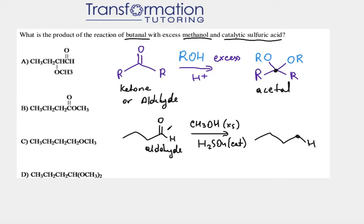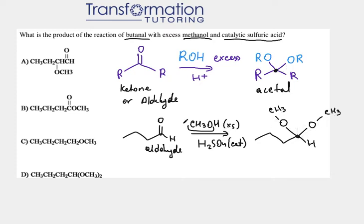To draw the acetal, we look at the carbonyl carbon — the carbon with the double bond O — and we no longer draw the double bond O. Instead, we draw two bonds each connected to an oxygen. The alcohol here is methanol, CH₃OH, so each OR group is OCH₃. We attach two OCH₃ groups where the double bond O used to be.